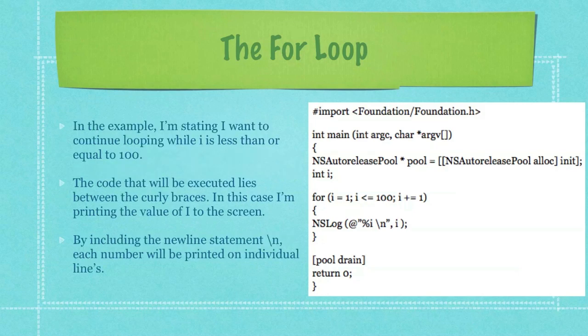In the example I'm stating I want to continue looping while i is less than or equal to 100. The code that will be executed lies between the two curly braces. In this case I'm printing the value of i to the screen. By including the newline statement, which is a backslash followed by the letter n, each number will be printed on individual lines.